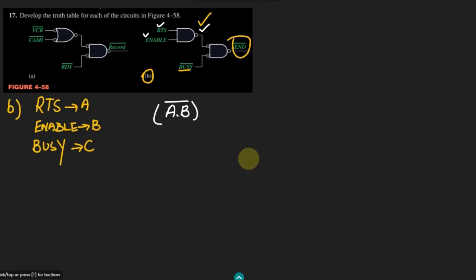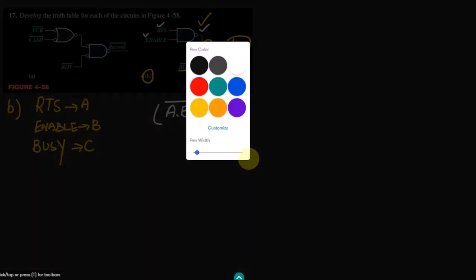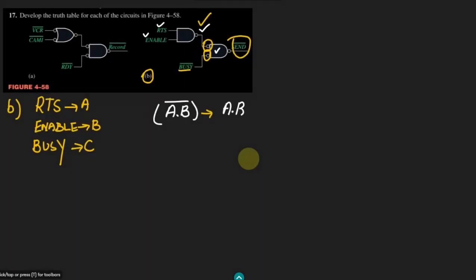Prior to the application of these inputs to the NAND gate, we have two bubbles here. As I have previously told you, a bubble represents the inversion of the input applied to it. Therefore, when the input is applied through the bubble, we get A·B double-complemented — the two complements cancel each other, and we simply get AB.